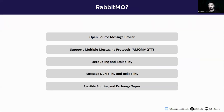RabbitMQ is generally called an open source message broker. There are other message brokers like Kafka and ActiveMQ, but what separates RabbitMQ from others is that it is built on a publisher-subscriber system and supports multiple messaging protocols like AMQP, MQTT, etc. It also provides decoupling and scalability options.